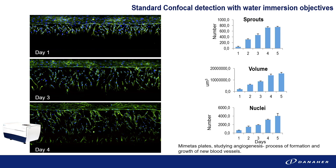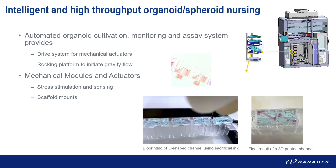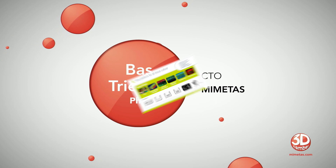Then you have confocal detection. Of course, the most notable example, I would say, are the organoid plates — or the organoplates from Mimetas — with the angiogenesis models here. And we are in the midst of really developing equipment that can actually house up to thousands of organoids.